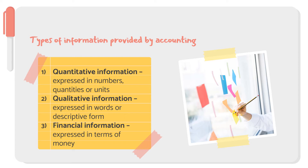What is the difference among these three? Quantitative information is expressed in numbers, quantities, or units. Qualitative information is expressed in words or descriptive form. And financial information is expressed in terms of money.